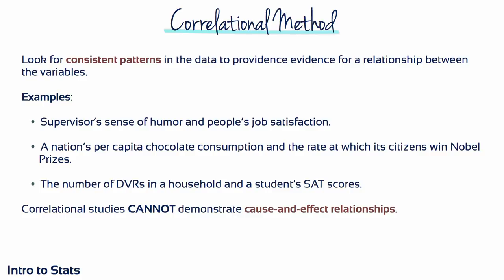In the correlational method, two different variables as they exist naturally are observed to determine whether there is a relationship between them. The results from a correlational study can demonstrate the existence of a relationship between two variables, but they do not provide an explanation for that relationship. For example, is a supervisor's sense of humour the cause of job satisfaction? Maybe — but there are many possible explanations, and we don't know exactly which factor or factors are responsible.